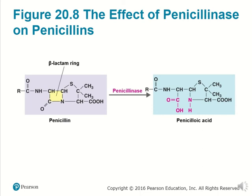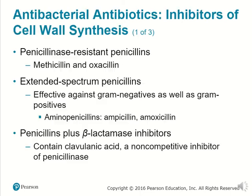Enzymes that ruin penicillins, such as penicillinase, effectively break apart certain parts of penicillin, turning them into penicillinoic acids, which are no longer functional. So there are penicillinase-resistant penicillins such as methicillin and oxacillin, which retain their antibiotic ability. There are also extended-spectrum penicillins, which are effective against gram-negative germs as well as gram-positive ones.